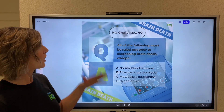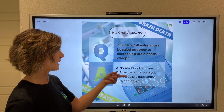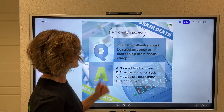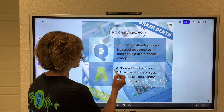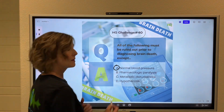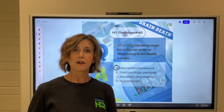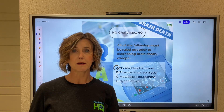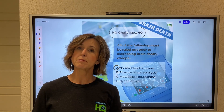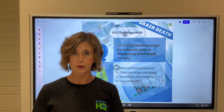When answering this question, all of them must be ruled out — hypothermia, metabolic disturbances, and pharmacologic paralysis. The exception is a normal blood pressure. We want the patient to have a blood pressure of at least 100 mmHg systolic, or a mean blood pressure of 60 mmHg when we start.